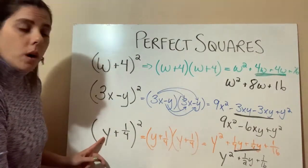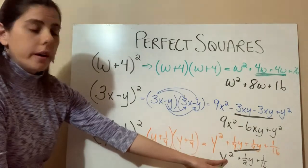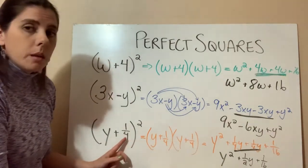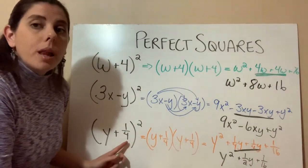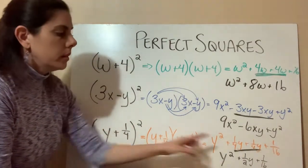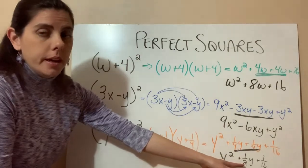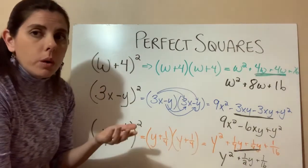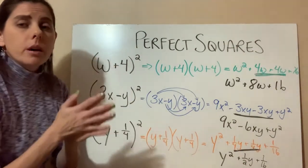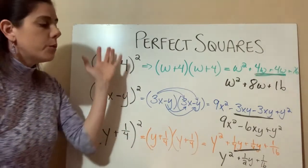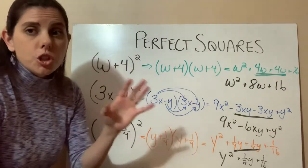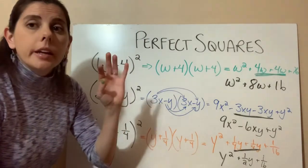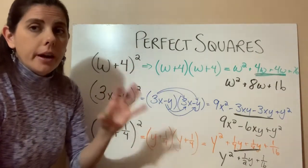y times y equals y squared. A quarter times a quarter equals a 16th. But a quarter plus a quarter equals a half. So that's the pattern that we want to recognize. And the reason why this is called a special product is a lot of times if we can recognize that pattern, we don't even have to do the distribution. We can just look at it and know exactly what that pattern is.